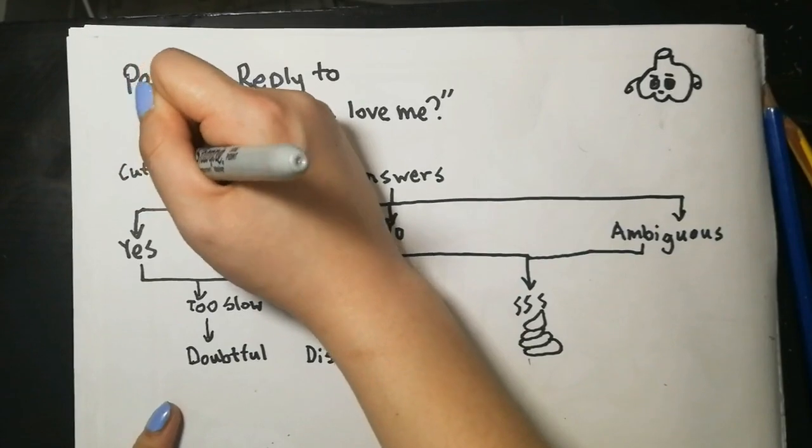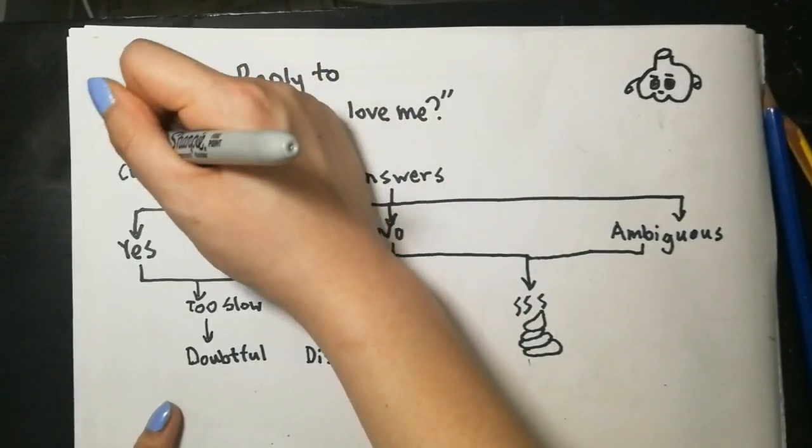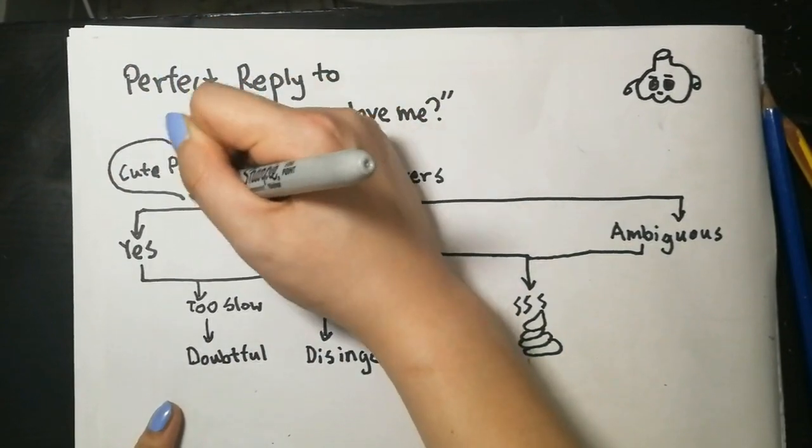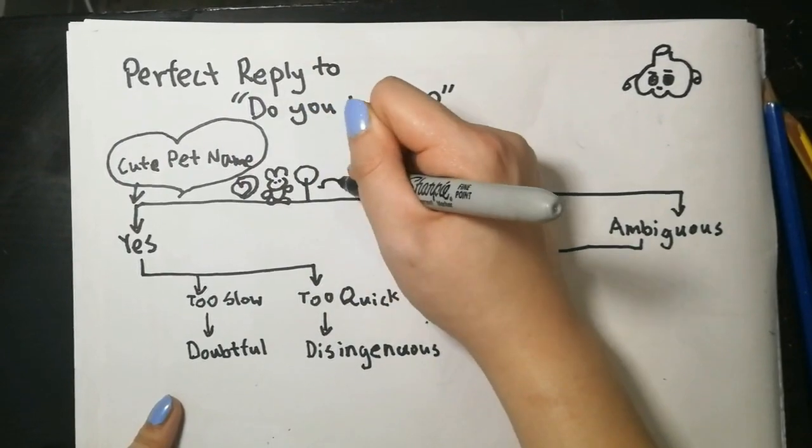One trick to control your pacing would be to butter them up a little bit first with a cute pet name. I've noticed a lot of the times pet names are sweets or candy related, such as Sweetheart, Gummy Bear, Lollipop, Sourpuss, or Jawbreaker.